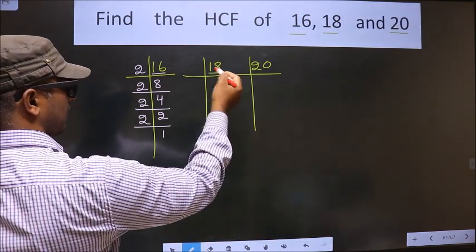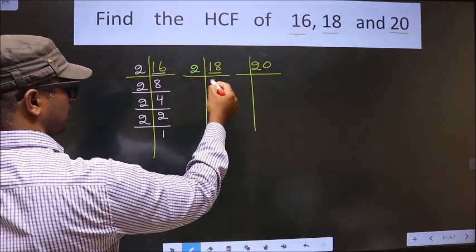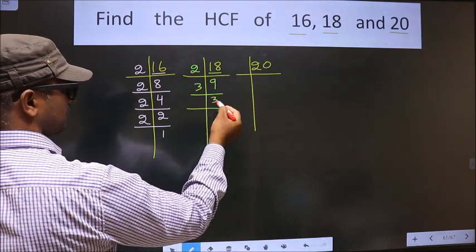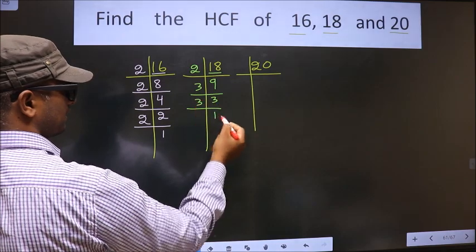Now here we have 18. 18 is nothing but 2 times 9. Now 9 is 3 times 3. Now 3 is a prime number so we take 3 times 1.